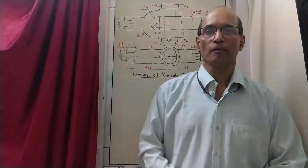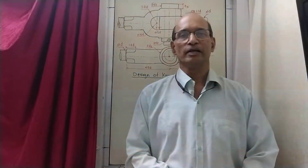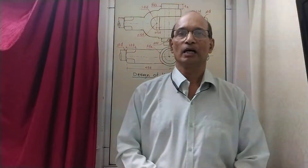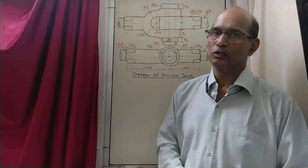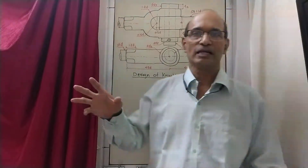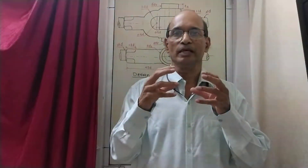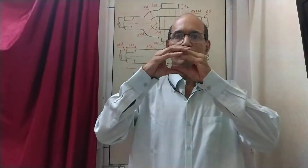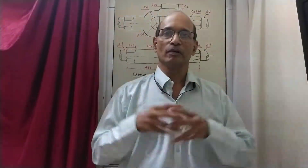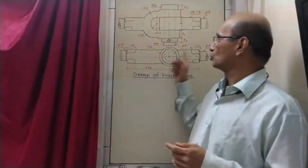Welcome. Today's topic is design of knuckle joint. Last time we saw the design of cotter joint. A knuckle joint is also a type of rod joint. Two rods coming from two ends need to be joined. Last time there was a socket and spigot arrangement with a cotter. Now again there are two rods, and we are going to join them using a knuckle joint.